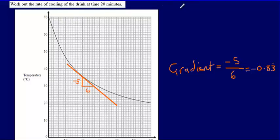Notice that I have ignored the negative. That's because I'm speaking about the rate of cooling. If I were speaking about the rate of warming, then I could refer to it as being minus 0.83, but because I'm speaking about the rate at which the drink is getting colder...